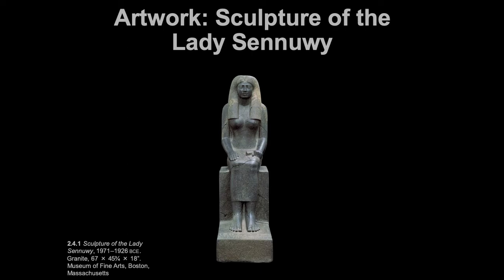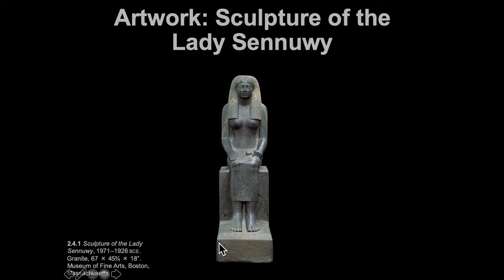This is a sculpture from ancient Egypt — the Sculpture of the Lady Senui, from 1971 BC, made out of granite. It is 76 inches high, almost six feet, and then 45 inches wide by 18 inches deep. From the view we're looking at, these two numbers are reversed — this would be the 18 inches and that would be the 45.